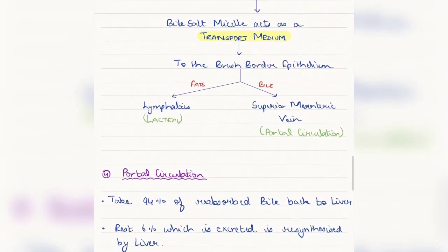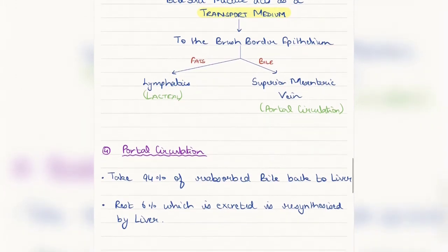In the portal circulation, this 94% of the reabsorbed bile is taken back, whereas the 6% which has been excreted is actually re-synthesized by the liver to maintain a constant amount of bile in the circulation.